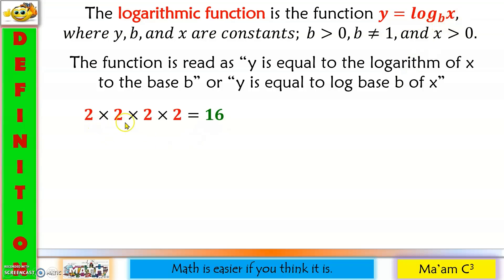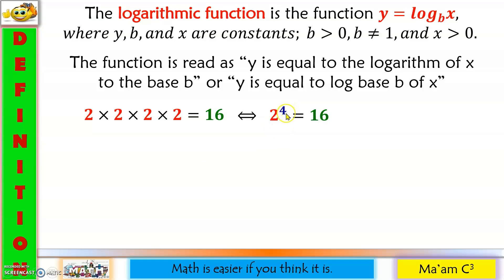2 times 2 times 2 times 2 is equal to 16. This is equivalent to 2 raised to 4 is equal to 16. 2 is the base, while 4 is the exponent. The exponent tells how many times the base is multiplied by itself — 1, 2, 3, 4. That is why our exponent is 4.